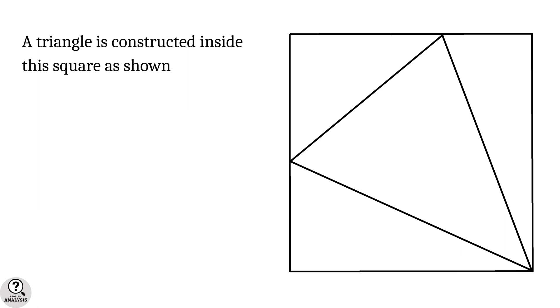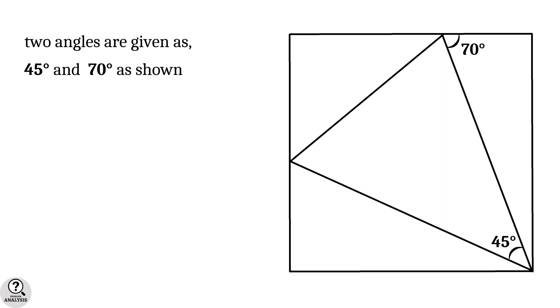Consider a square. A triangle is constructed inside this square as shown in the figure. Two angles are given as 45 degrees and 70 degrees. Then my problem is what is this red marked angle?